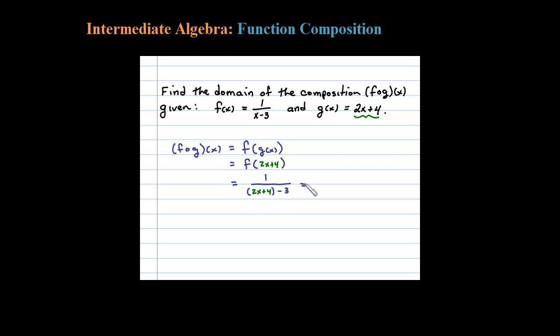So the composition after I simplify is 1 over 2x plus 1. Now the composition here, it looks like the domain is all real numbers except for whatever makes the denominator here 0. So what's going to make that 0?